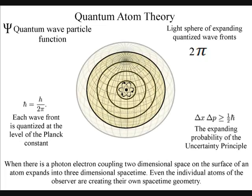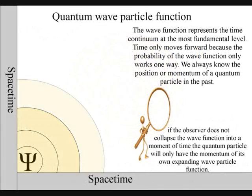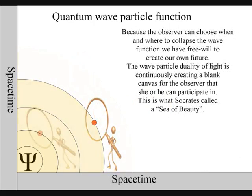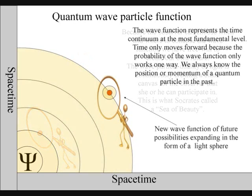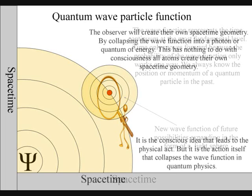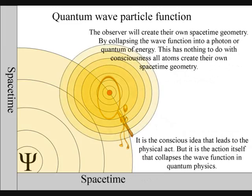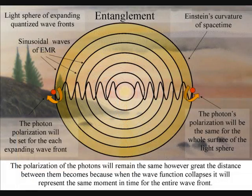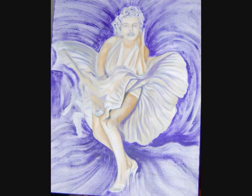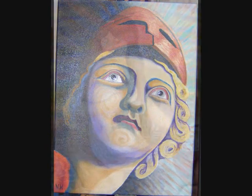This has nothing to do with consciousness. All atoms create their own spacetime geometry. But it is because life, in the form of an observer, can choose when and where to collapse a wavefunction that we have free will. Life will create its own ripples in the fabric of spacetime, forming its own broken symmetry of its own evolutionary path. The forward momentum of light is continuously creating a blank canvas for the observer that she or he can participate in. This is what Socrates called a sea of beauty.